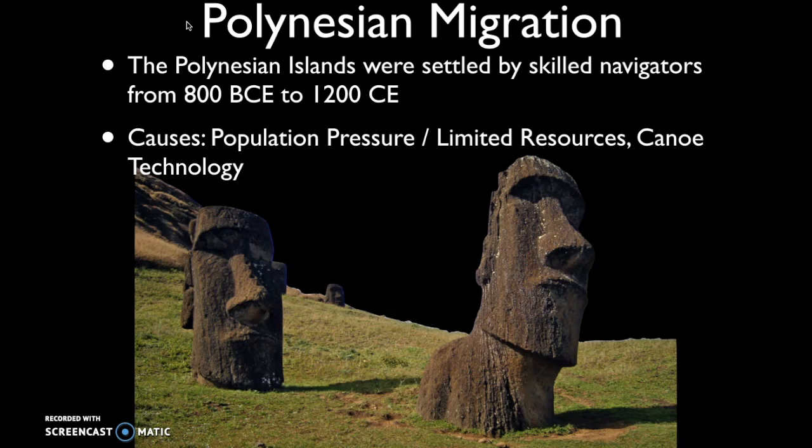The causes — the reason they were able to successfully migrate — were, one, they had canoe technology, but they were also forced to move in many cases. When we think about migration, there are oftentimes push and pull factors. One of the major push factors was population pressure and limited resources. If you learn about Easter Island, one of the major challenges its people faced was running out of wood. These limited resources plus population pressures were catalysts that caused navigators to hop from island to island, eventually reaching Hawaii and Easter Island in the middle of the Pacific.